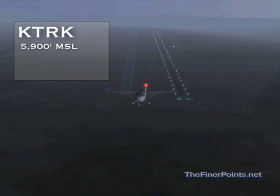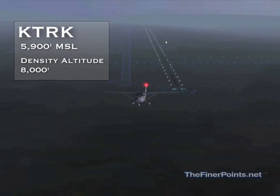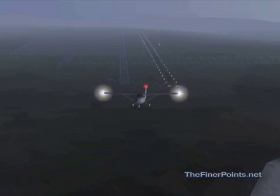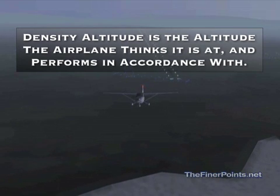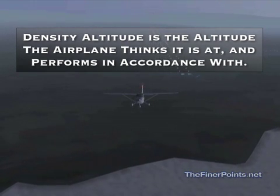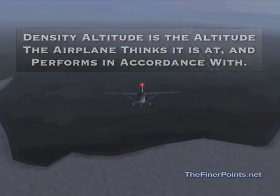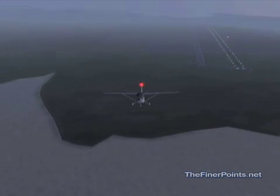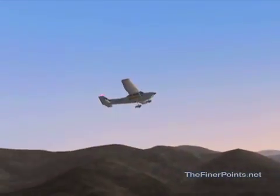An airport that is 5,900 feet MSL, for example, might have an equivalent density altitude of 8,000 feet if there is low pressure in the area and the temperature is high. The airplane knows no difference. Density altitude is used to help predict performance. The density is what it is, and the true altitude cannot be used to measure how the airplane and its engine will react in reduced barometric pressures.